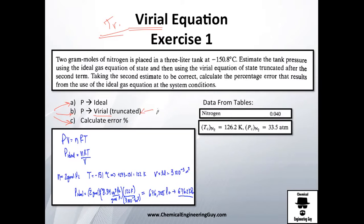Two gram-moles of nitrogen is placed in a three liter tank, that's volume three liters or three times ten to the minus three cubic meters, at this temperature which I'm going to round out to minus 151 Celsius.